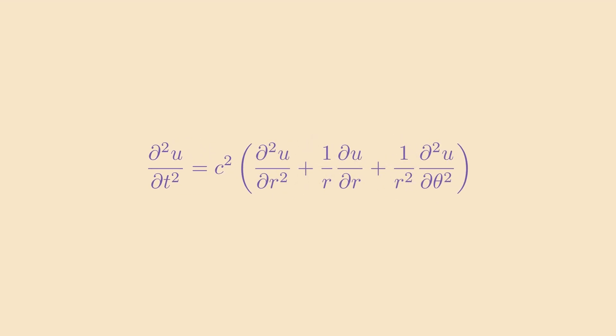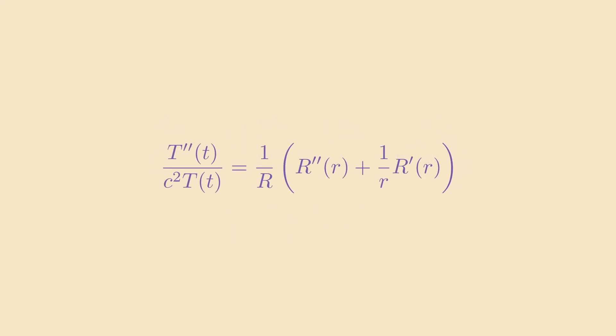Instead of x and y, we'll convert to polar coordinates and for the sake of simplicity, we'll simplify to the symmetrical case so that we can ignore theta. But know that even if we considered it, the solution would be similar. Assuming u can be written as r times t, because r and t are independent, we have this. And since both sides are purely in terms of r or t, they must be equivalent to some constant k. Finally, using the Taylor series, it can be shown that the solution is once again the Bessel function.